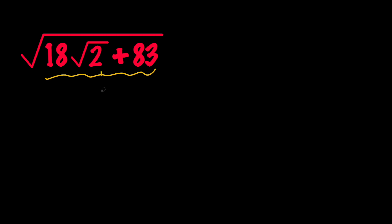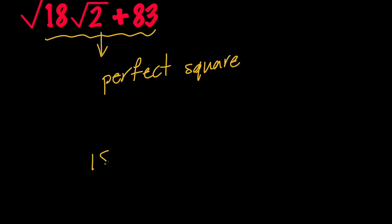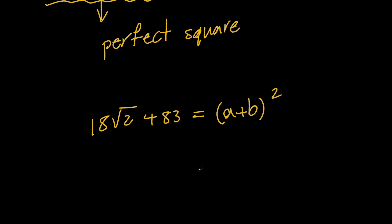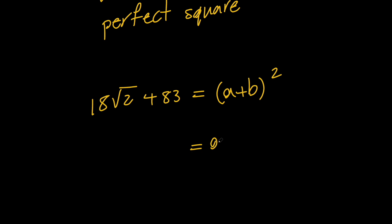So let's say that 18 root 2 plus 83 is a perfect square, which indicates that 18 root 2 plus 83 is in the form of a plus b all squared. But notice that a plus b all squared can be expanded into a squared plus b squared plus 2ab.